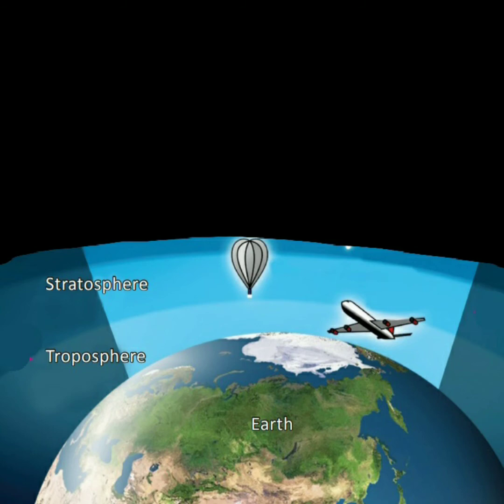The ozone layer is also present in the stratosphere. The ozone layer absorbs harmful ultraviolet rays from the sun, so it absorbs all the harmful UV rays.